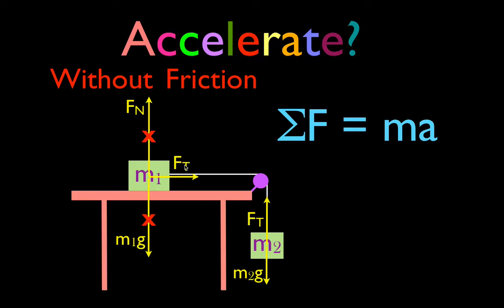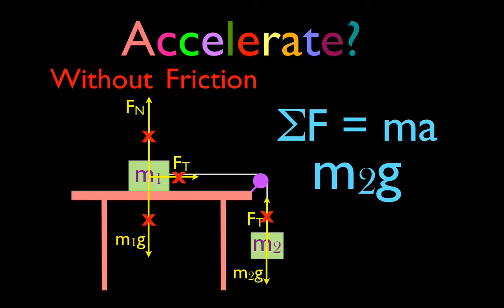The tension force on M1 pulls to the right, but thanks to Newton's third law, the tension forces on both sides of the string are equal in magnitude but opposite in direction, so they cancel each other out — we can ignore those two forces as well. That means of all five forces acting on both objects, we only have one force left: M2g. That single force is an unbalanced force, and therefore yes, these two objects will accelerate due to that unbalanced force from M2g.